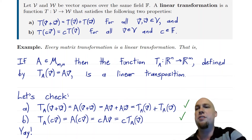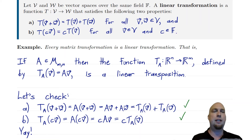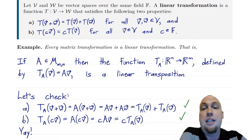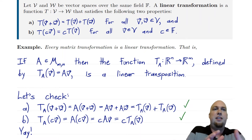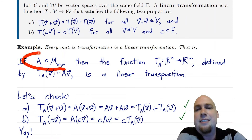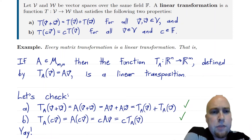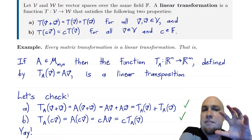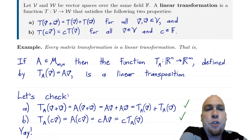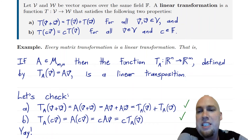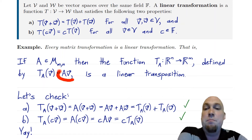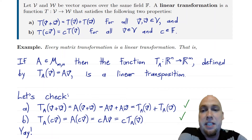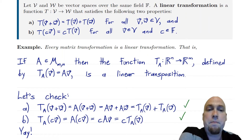Let's go through the motivating example to see why linear transformations are really a generalization of something you've already seen in introductory linear algebra — and that thing is matrices. Linear transformations are just the generalization of matrices. Suppose you've got some M by N matrix. Once you're given that matrix, you can define a function between two vector spaces — this time Rn and Rm. We can think of that matrix as sending N-dimensional vectors to M-dimensional vectors.